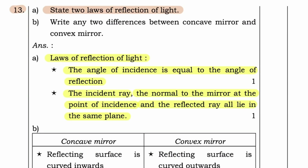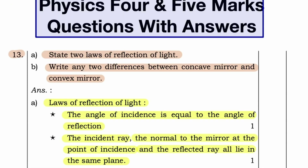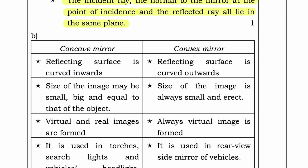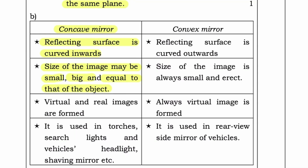Question B: Write any two differences between concave mirror and convex mirror. The two differences — they have given four. First, concave mirror: reflecting surface is curved inwards; size of image may be small, big and equal to the size of the object; virtual and real images are formed; it is used in torches, searchlights and vehicle headlights, shaving mirrors, etc.